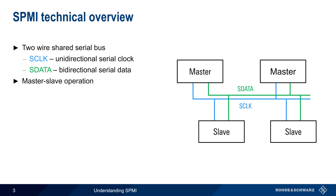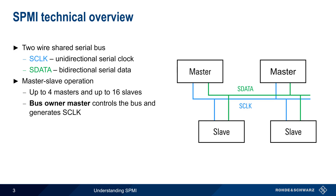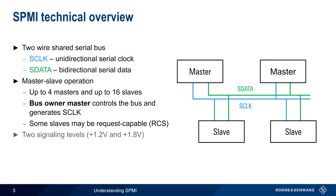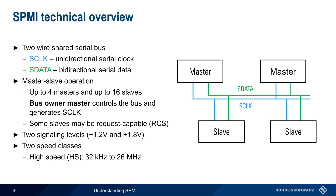This bus is operated in a master-slave arrangement, with up to four masters and up to 16 slaves. At any given time, one master assumes the role of the bus owner master, who is responsible for controlling the bus and generating the clock signal. Slave nodes may also be request-capable — that is, they can initiate communications. Two voltage levels are supported: 1.2 and 1.8 volts, as well as two speed classes — a high-speed class that goes up to 26 MHz, and a low-speed class that has a maximum speed of 15 MHz.